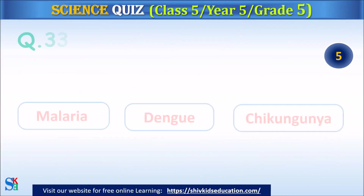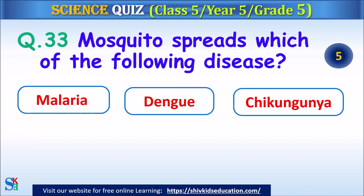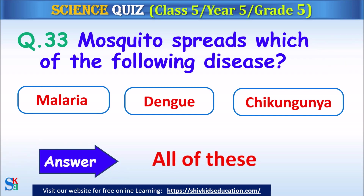Question 33: Mosquitoes spread which of the following diseases? Malaria, Dengue or Chikungunya? The answer is all of these.